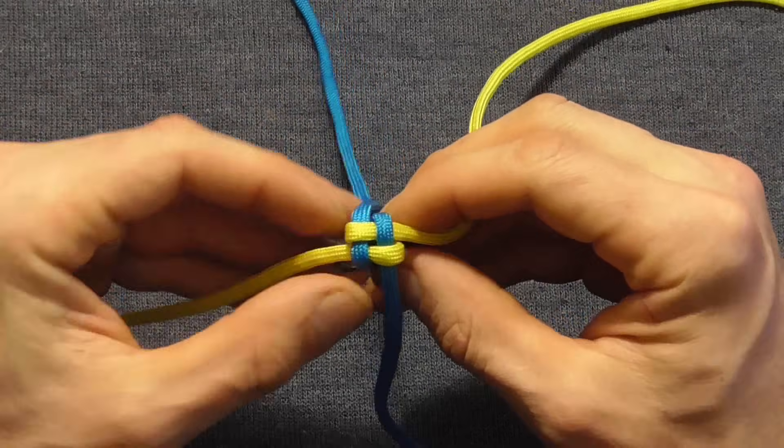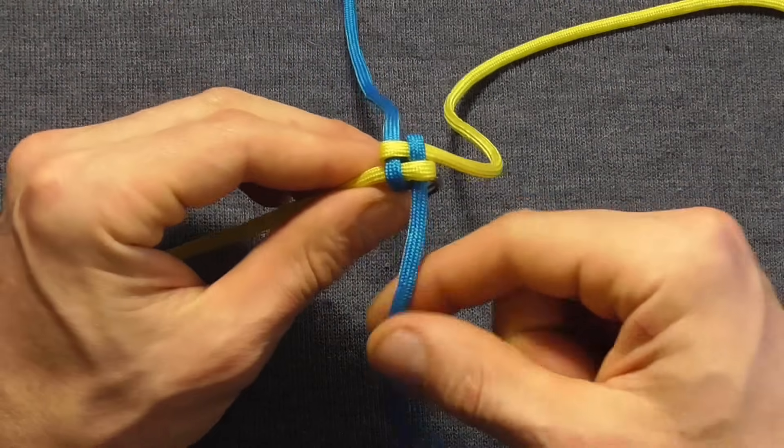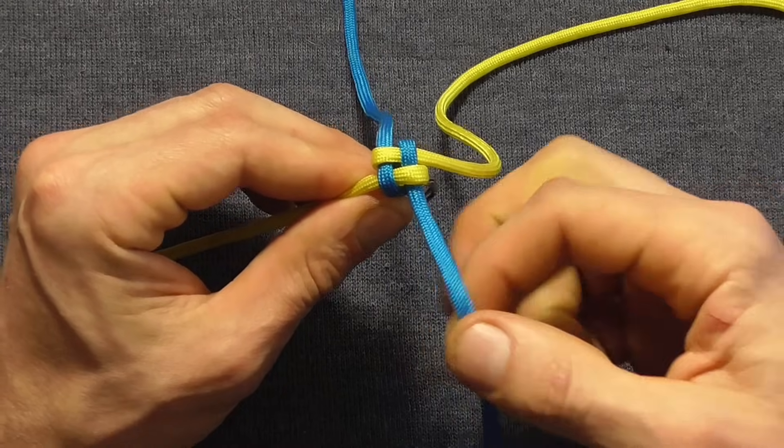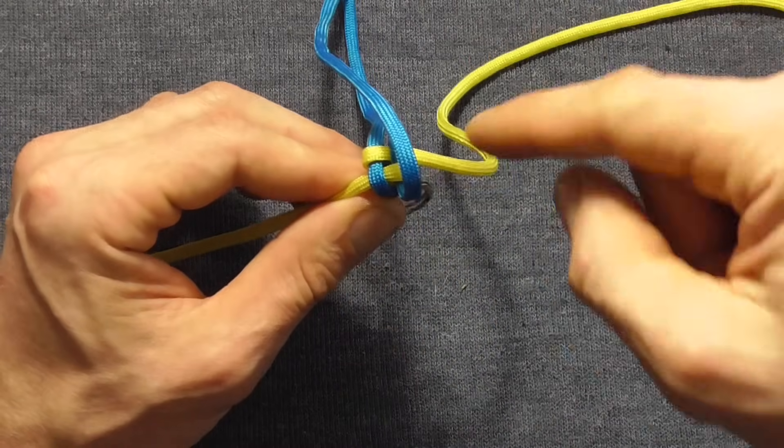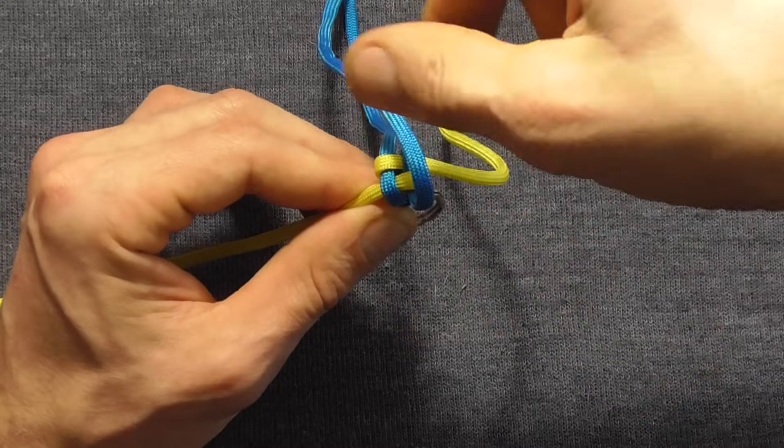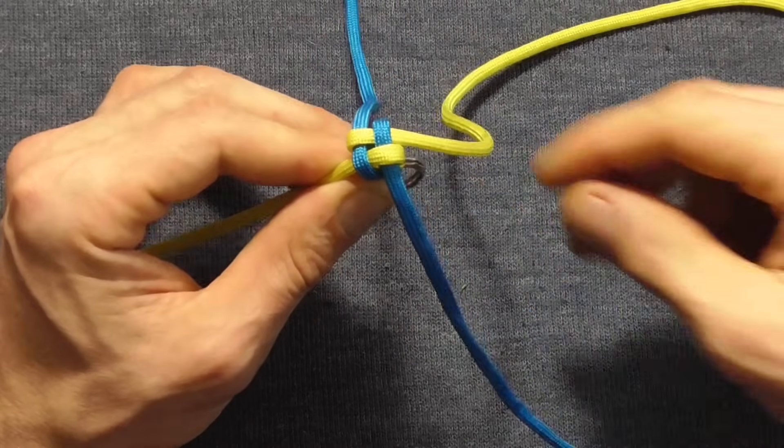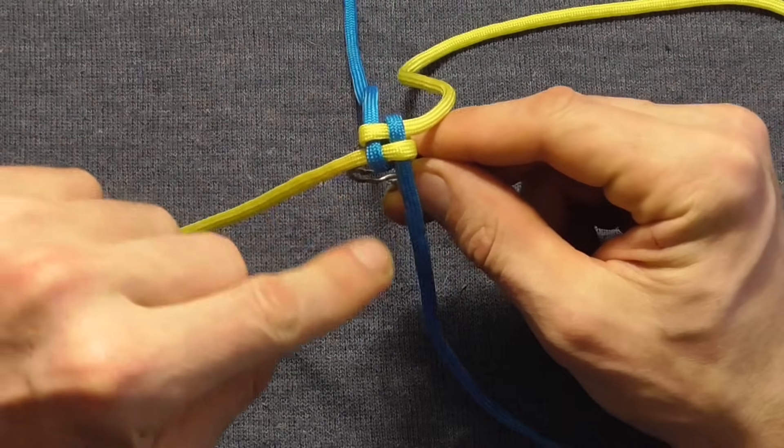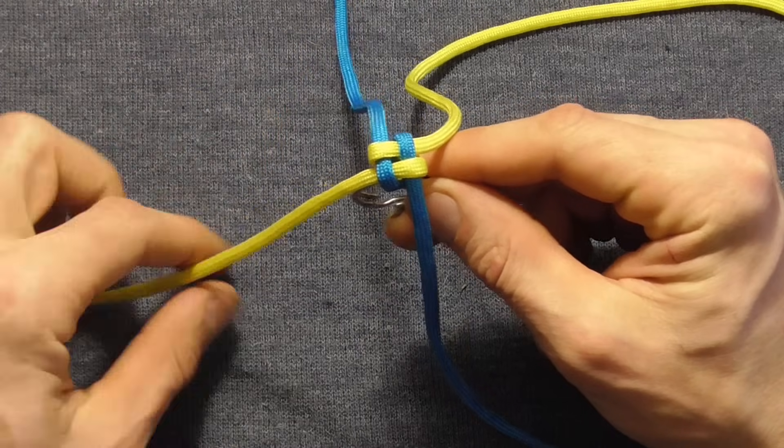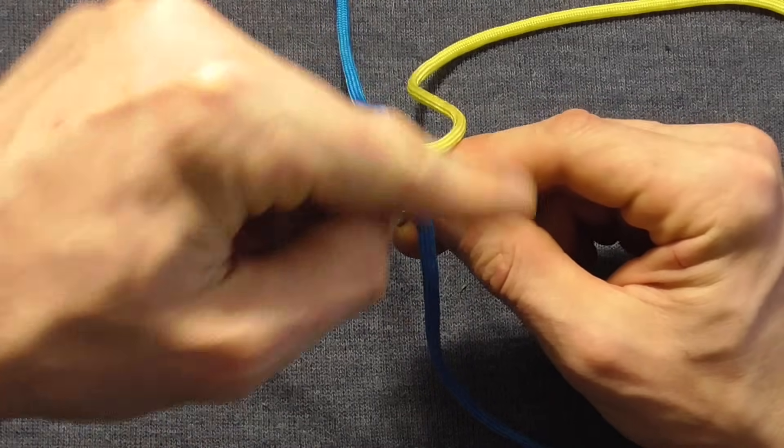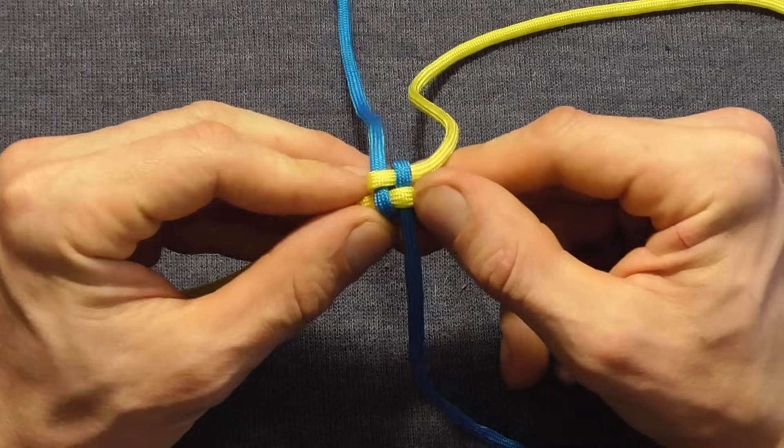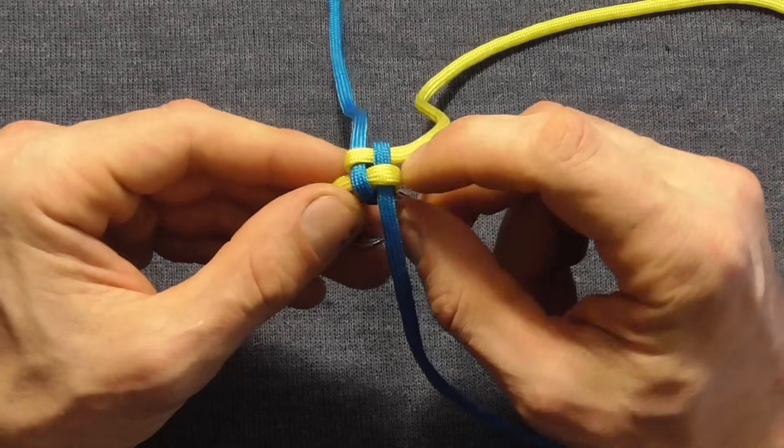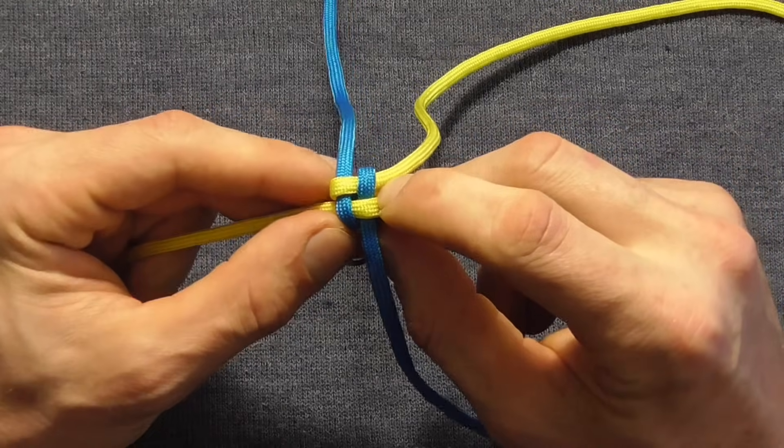And then we just need to keep repeating that pattern, starting at the bottom. If we start with the bottom right hand strand going up, we're going to work anti-clockwise, and if we started with the bottom left hand strand going up, we would work clockwise around. We just need to keep repeating that pattern until we get the key fob as long as we want to get it.